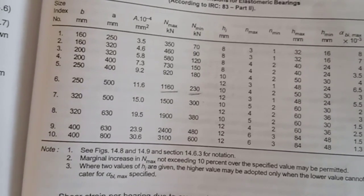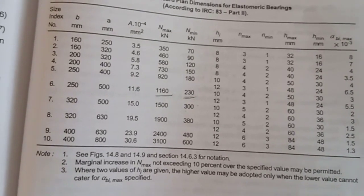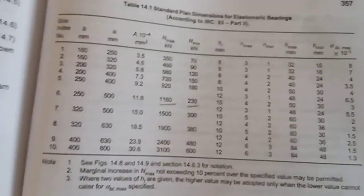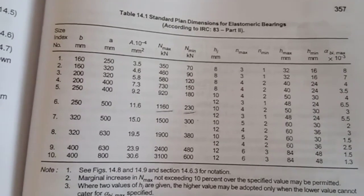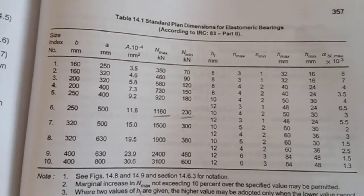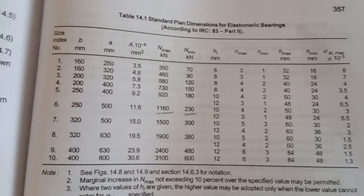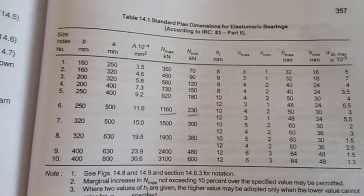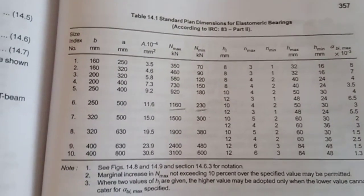From the table in IRC 83 part 2, we are trying the plan 250 by 500, which has N minimum 230 and N maximum 1160, and we are taking the thickness 39 mm as per this table.